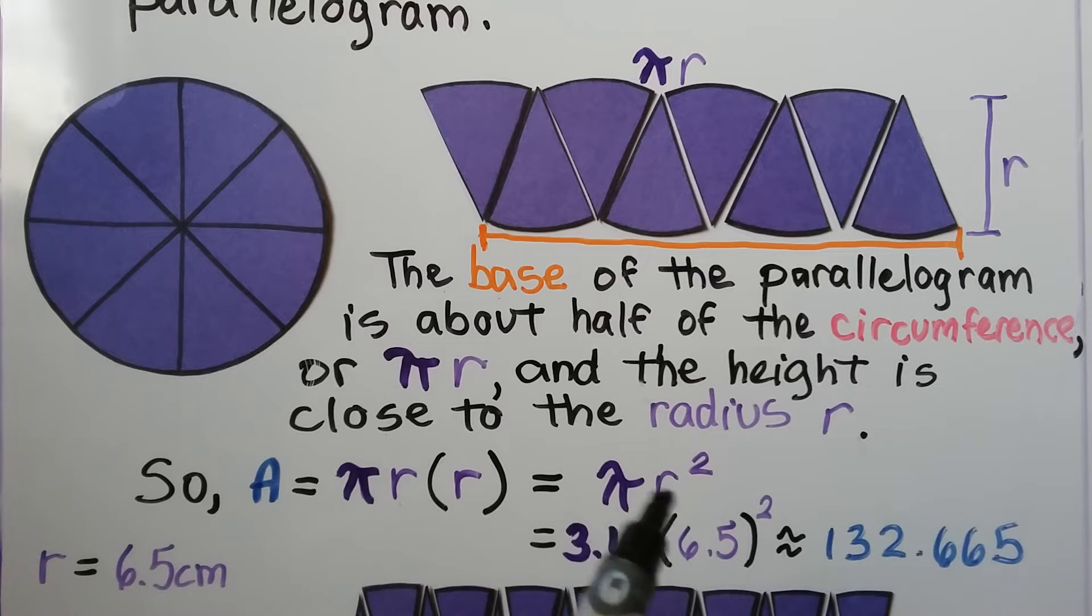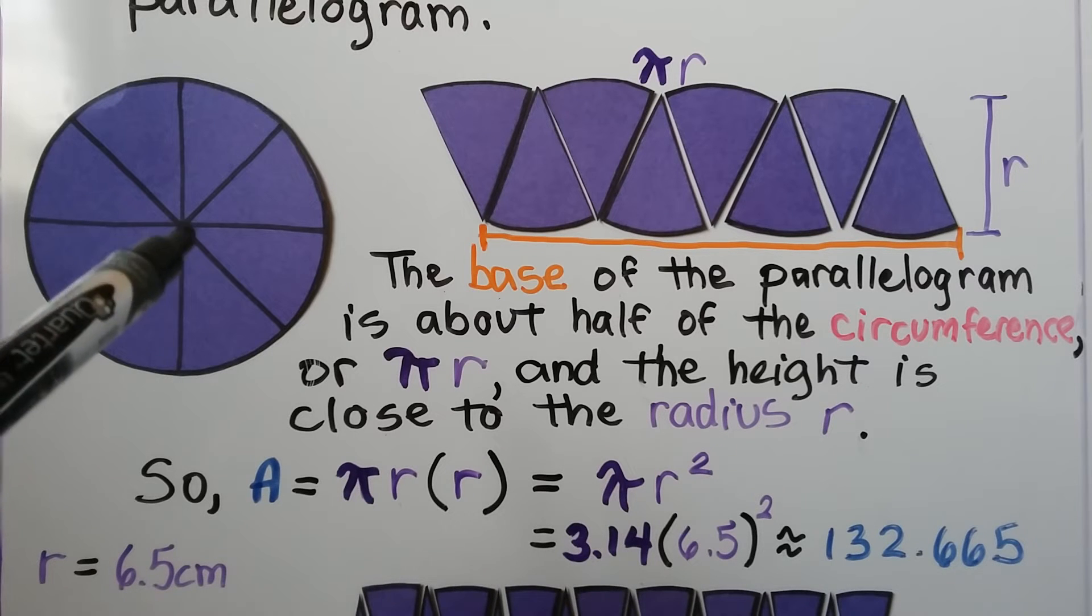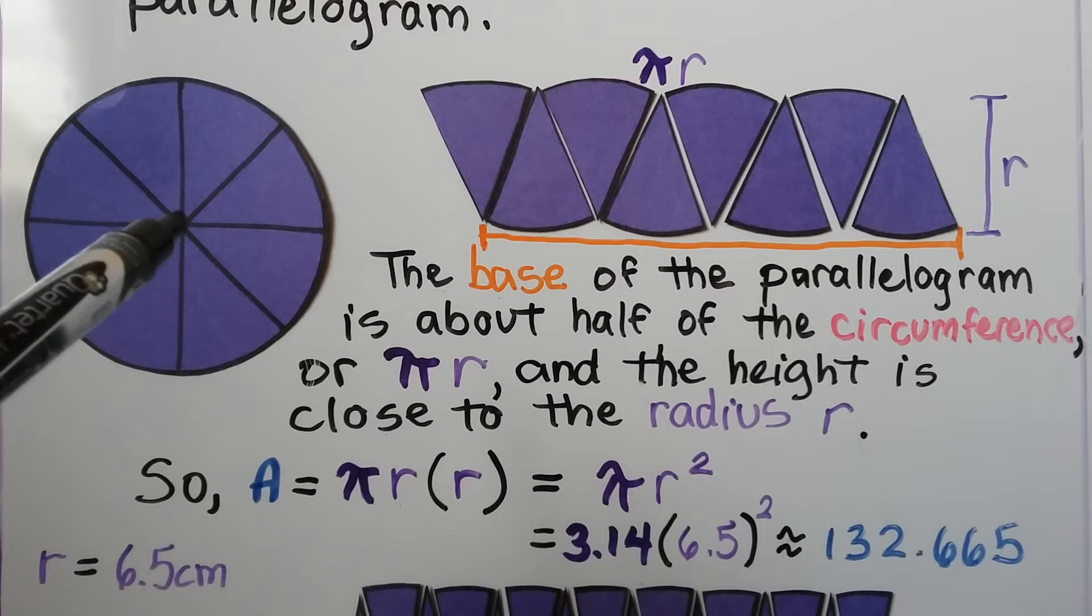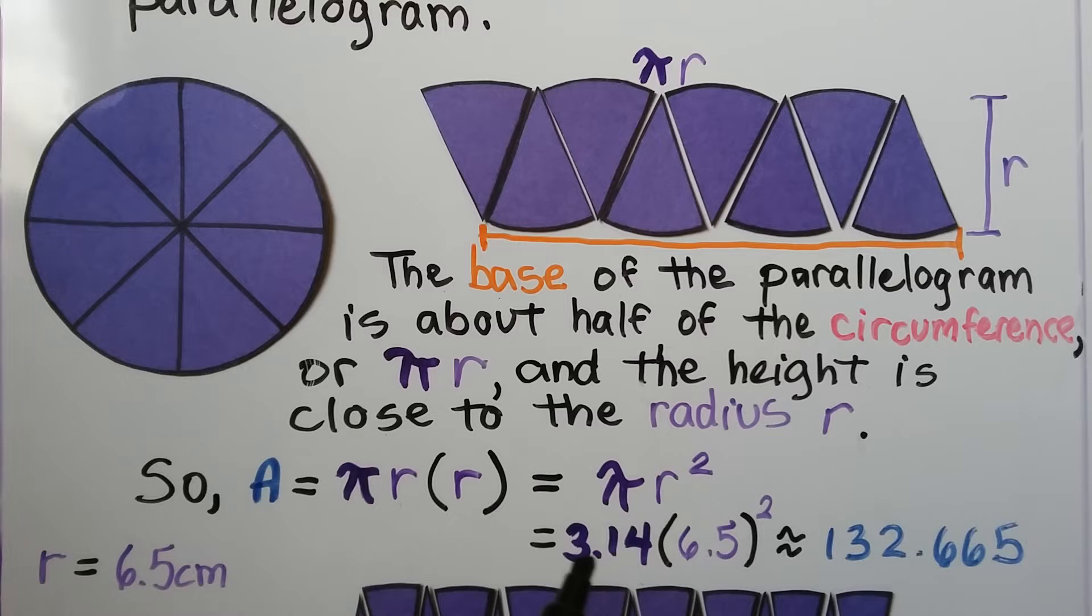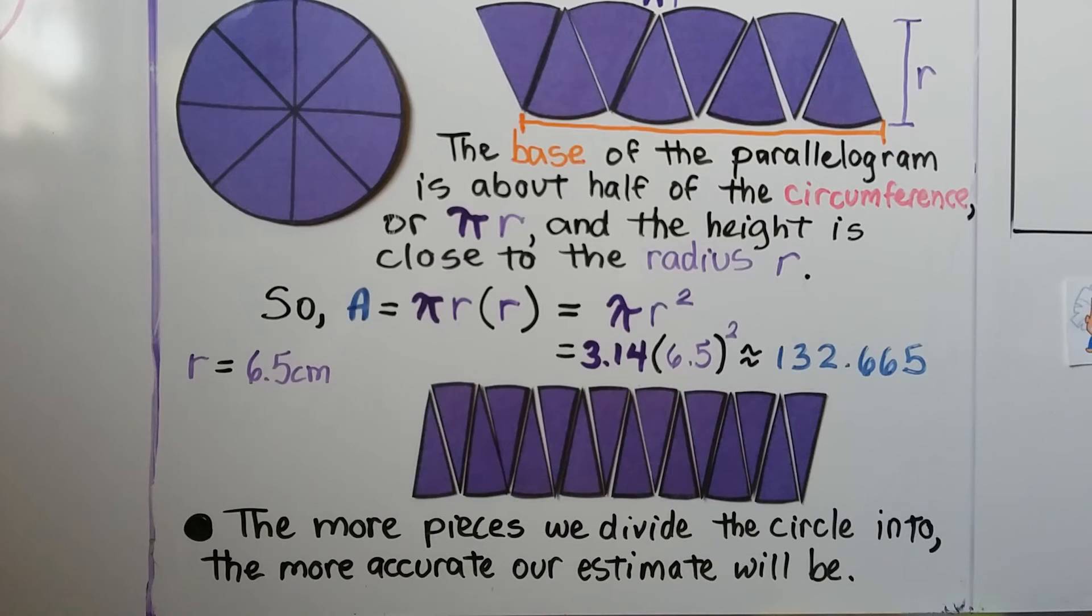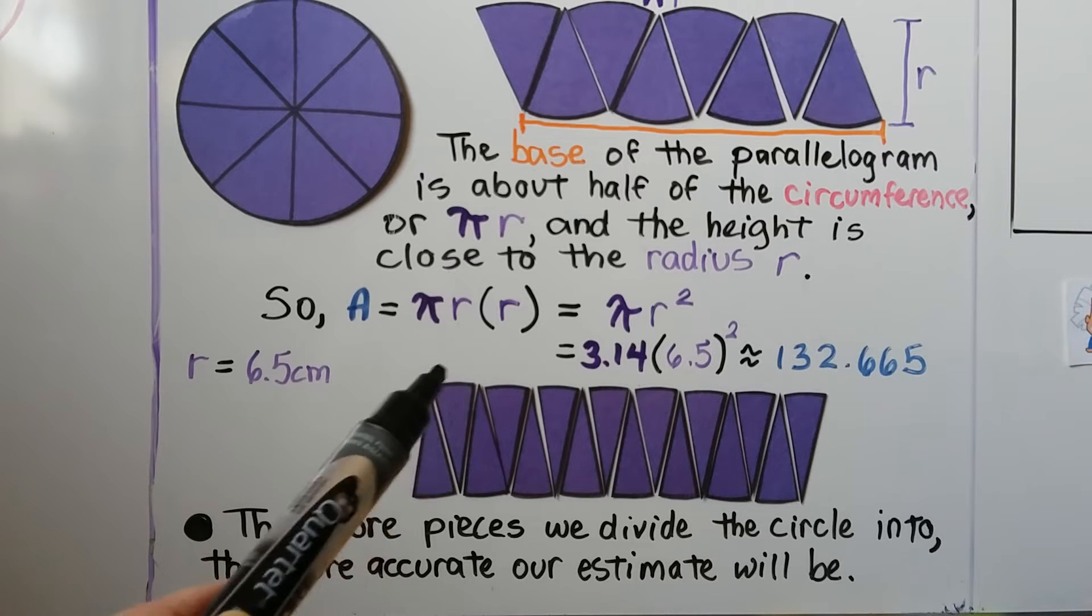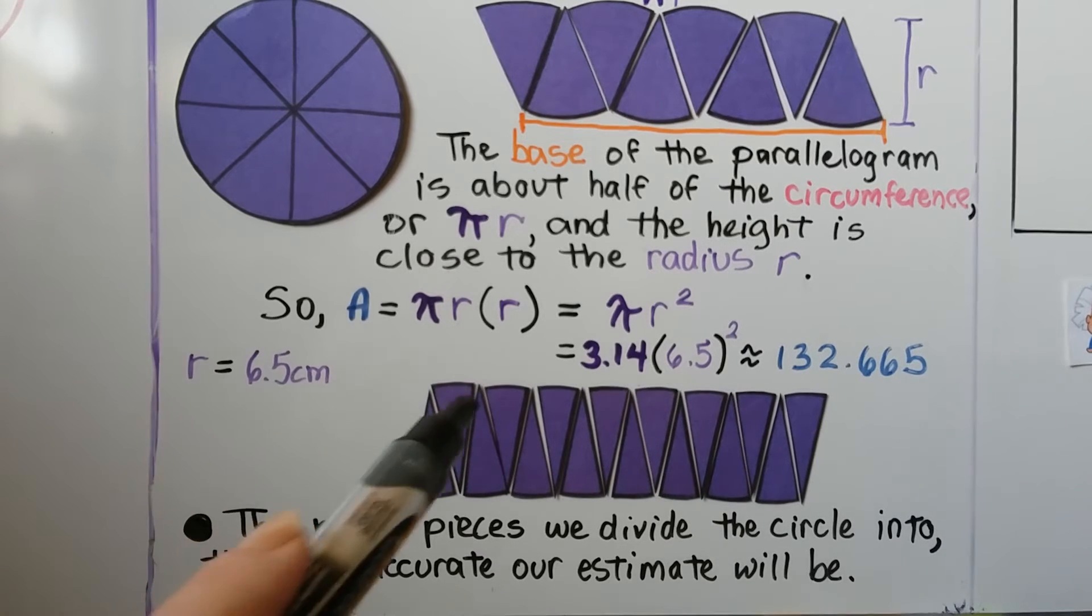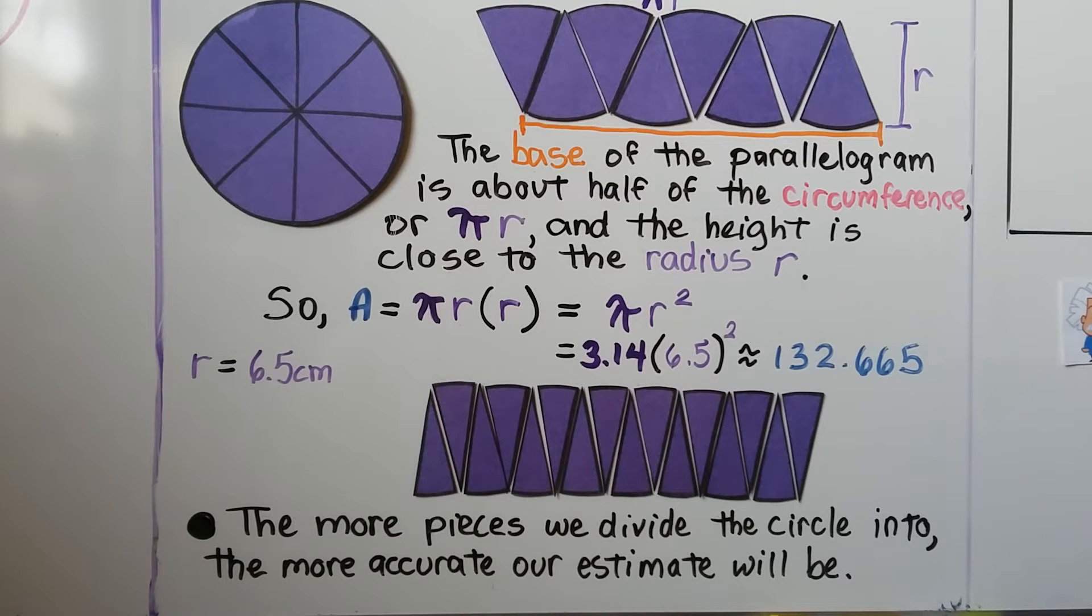Because we're doing r times r, that would be r squared. From the center of this circle to the edge is 6.5 centimeters. We can do 3.14 as pi and multiply it by 6.5 squared, and that gives us approximately 132.665. The more pieces we divide the circle into, the more accurate our estimate will be, because the more it looks like a parallelogram and the more accurate the estimate will be.